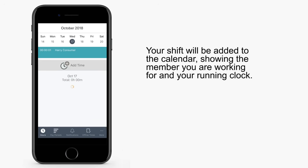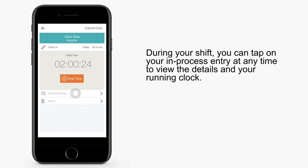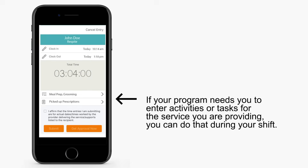Your shift will be added to the calendar showing the member you're working for and your running clock. During your shift, you can tap on your in-process entry at any time to view the details and your running clock. If your program needs you to enter activities or tasks for the services you're providing, you can do that during your shift.